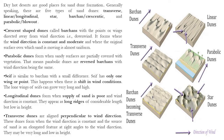Then there are seif dunes, which are similar to barchans but with a small difference. A seif dune has only one wing or point. This happens when there is a shift in wind direction. The long wings of a seif can grow very long and high. So while barchans have two horns or two wings, a seif develops only one wing because of the constant change in the direction of the wind.